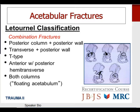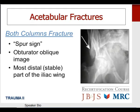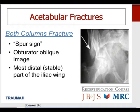The both-columns fracture has a pathognomonic radiographic finding: the so-called spur sign, seen on the obturator oblique image. The arrow points to the spur, which represents the most distal stable portion of the iliac wing. This radiograph also demonstrates the phenomenon of secondary congruence, where the acetabular articular surfaces are significantly displaced relative to the intact ilium, but the anterior and posterior columns are relatively minimally dissociated from one another — making this fracture potentially amenable to non-operative treatment.